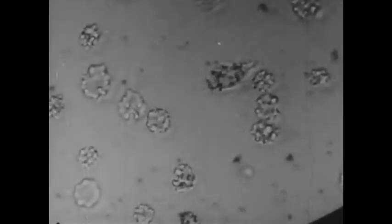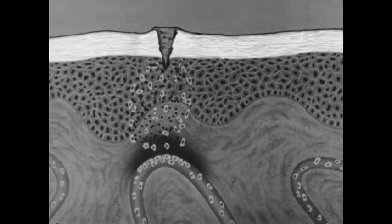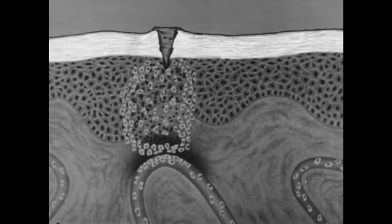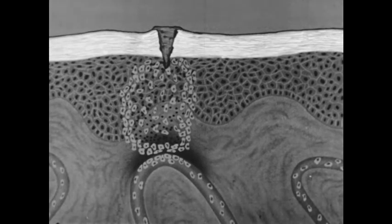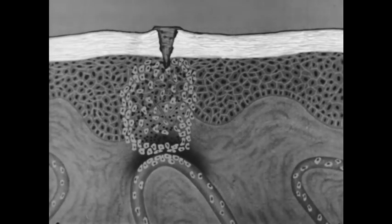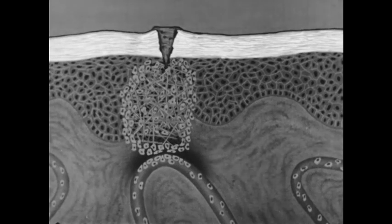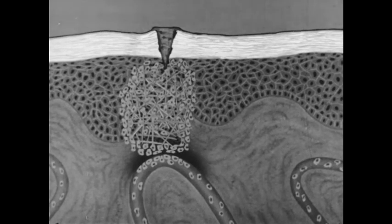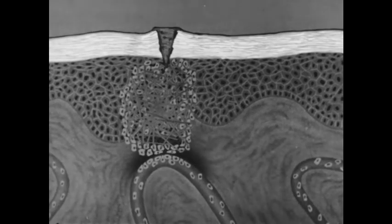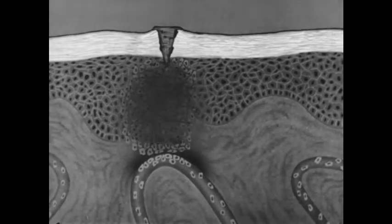Within a few hours, a wall of these phagocytic cells, aided by similar cells already in the tissue, are enclosing the bacteria. Meanwhile, blood fluids have leaked through the capillary wall and they support the walling off action by forming thread-like nets of fibrin. Eventually the whole interior softens, resulting in a pus-filled abscess.